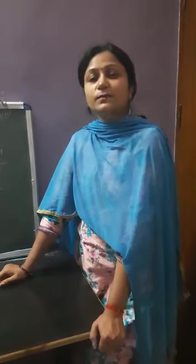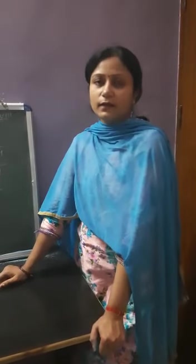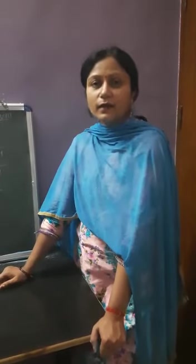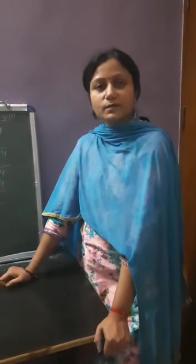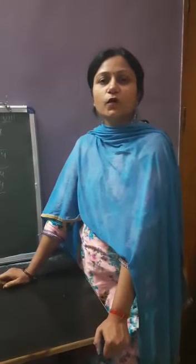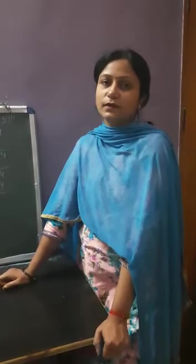Hello students. Last time I explained how you get the square root of a given number. Those numbers were like 576 and 441, and there was no decimal in any of those numbers. Now today I am going to explain how you will get the square root of decimal numbers.